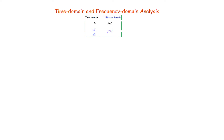We will frequently move from time domain to frequency domain, also called phasor domain — these names are used interchangeably. In the time domain, an inductor L becomes jωL in the frequency or phasor domain. Similarly, di/dt in the time domain becomes jω·I in the phasor domain.